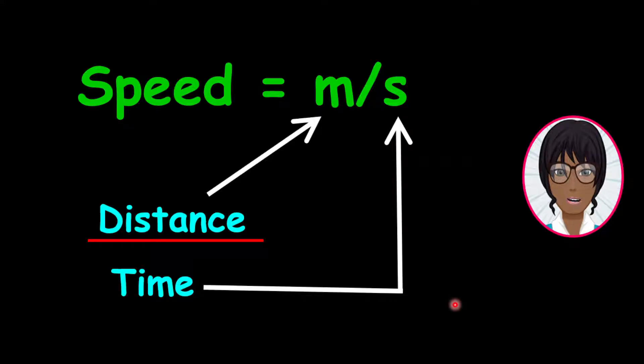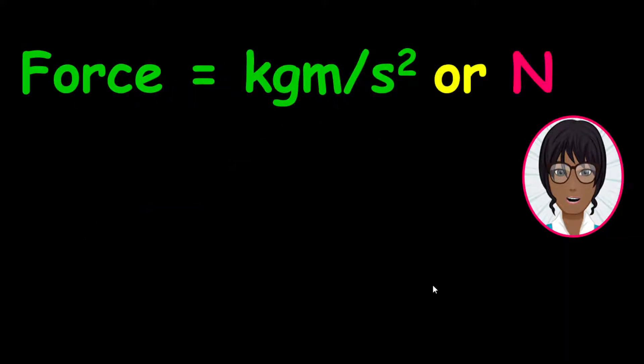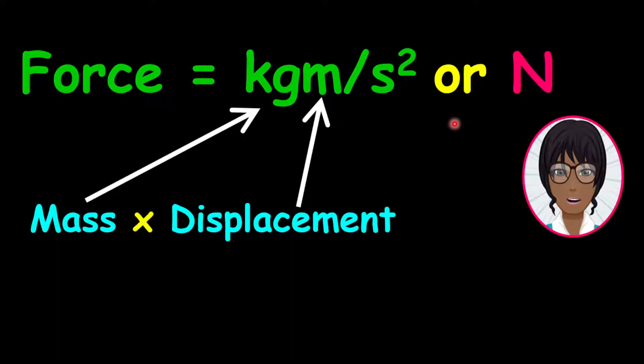Now let us look at a final example. Force is measured in kilograms meter per second squared, or newtons. Please note that the unit newton is hard to be used to determine the combination of base units. This is because units like newtons are special units that were established based on the names of scientists. Therefore, the unit kilograms meter per second squared is best used when describing the base units that are involved in calculating force. Notice that this combination involves both a multiplication and a division.